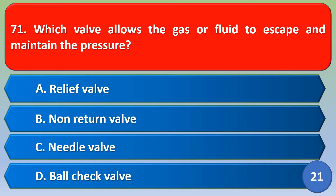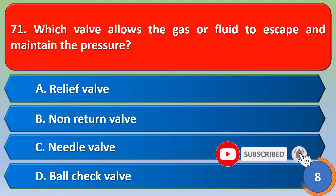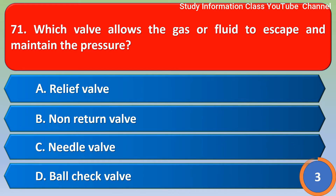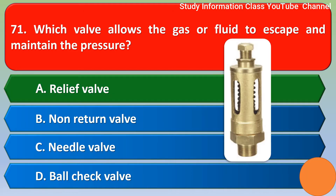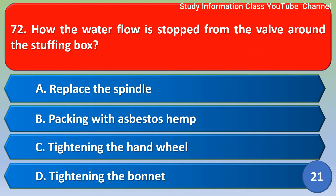Namaste. Which valve allows the gas or fluid to escape and maintains the pressure? Option A: relief valve, Option B: non-return valve, Option C: needle valve, Option D: ball check ball. The correct answer is Option A, relief valve.